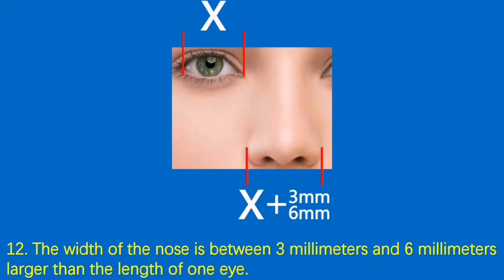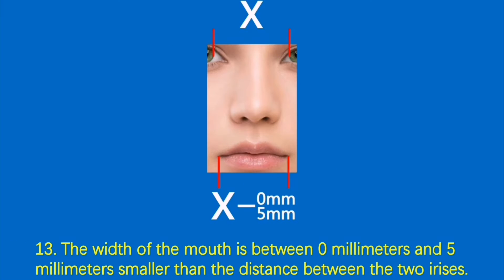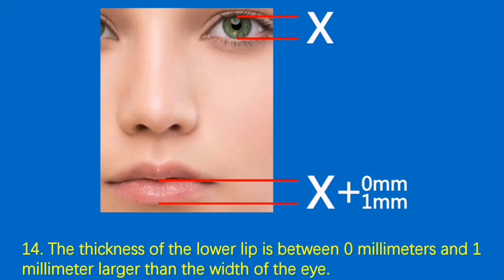Condition 12: The width of the nose is between 3 millimeters and 6 millimeters larger than the length of one eye. Condition 13: The width of the mouth is between 0 millimeters and 5 millimeters smaller than the distance between the two irises. Condition 14: The thickness of the lower lip is between 0 millimeters and 1 millimeter larger than the width of the eye.